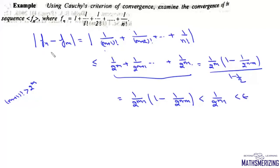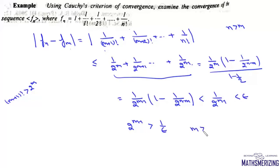So mod fn minus fm is less than epsilon when n is greater than m, and from here we can write 2^(m-1) is greater than 1 upon epsilon. Taking log of both sides, m is greater than 1 minus log epsilon. This means the sequence is a Cauchy sequence, and therefore it is a convergent sequence.